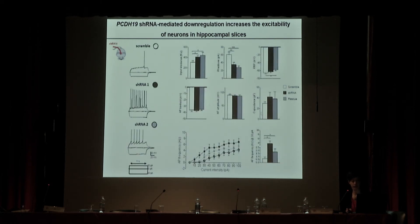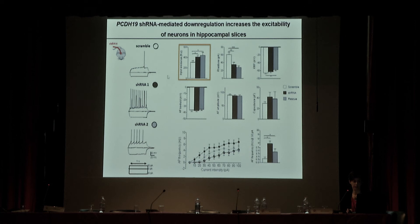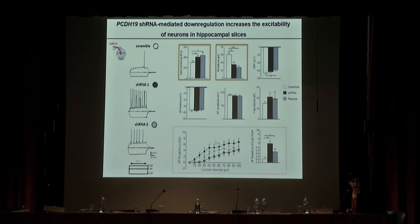We are trying to reconfirm this data in hippocampal slices. These are still preliminary data, but in agreement with what was observed in vitro: we still see an increase in input resistance with different PCDH-19-specific shRNAs, a significant decrease in rheobase, and an increase in spiking frequency.